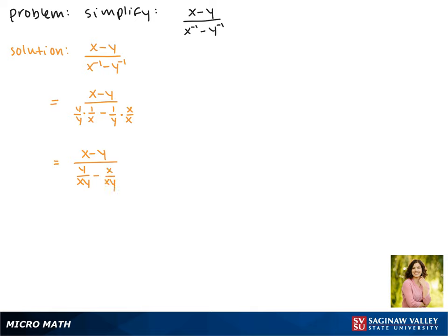Now that we have common denominators, we can combine these two terms. So we get x minus y over y minus x over xy.